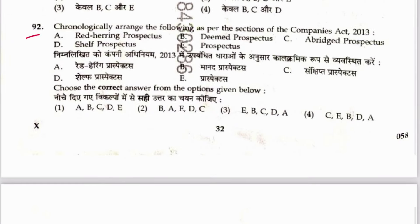Question 92: Chronologically arrange as per sections of the Companies Act. Abridged prospectus — Section 2(1) definitions. Deemed prospectus — Section 25. Shelf prospectus — Section 31. Red herring prospectus — Section 32. Sequence is C, E, B, D, A. Answer is 4.